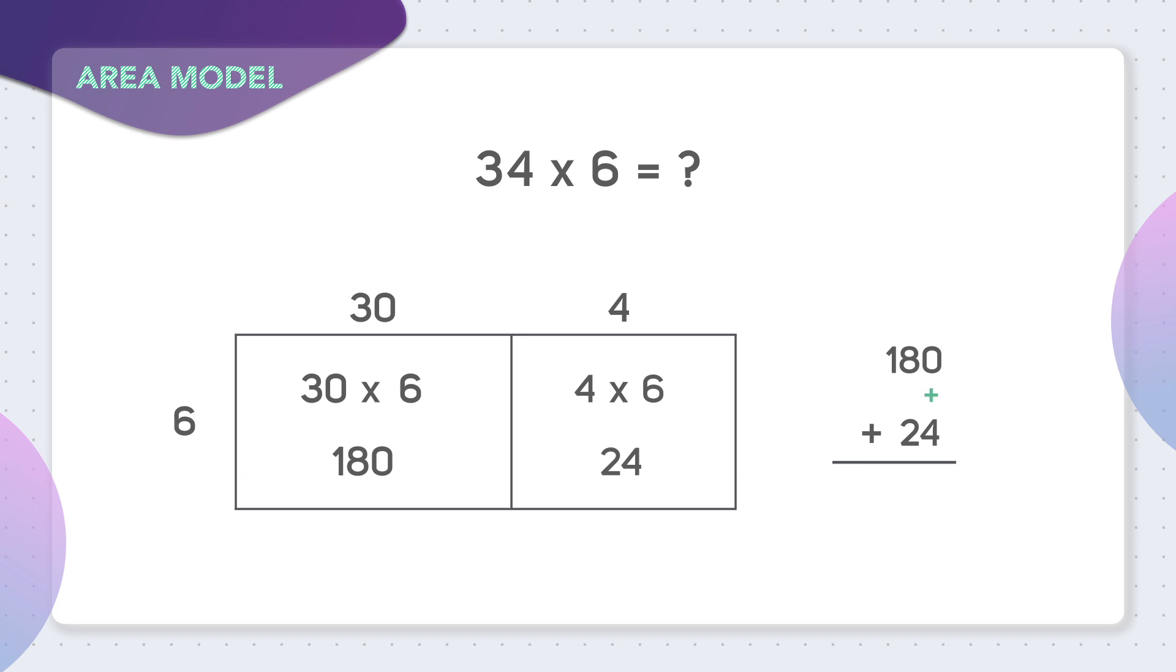What does 180 plus 24 equal? We can do 0 plus 4 equals 4. 8 plus 2 equals 10, which we can write by regrouping the 1 and holding the 0 down below. And then 1 plus 1 equals 2. So 34 times 6 equals 204.